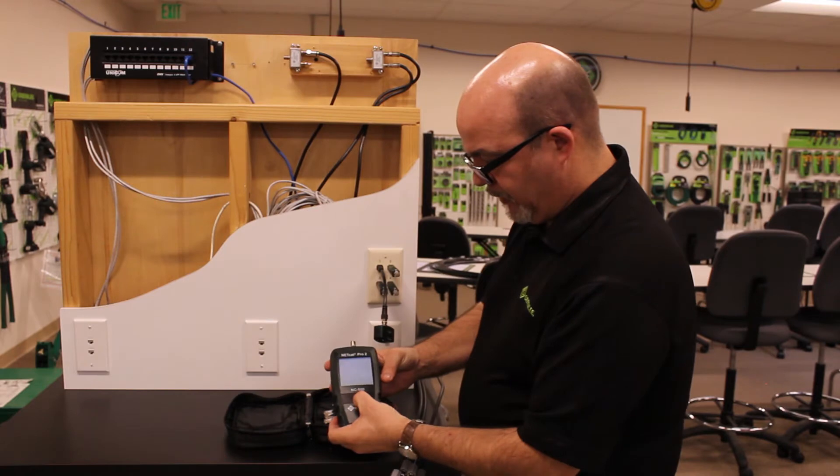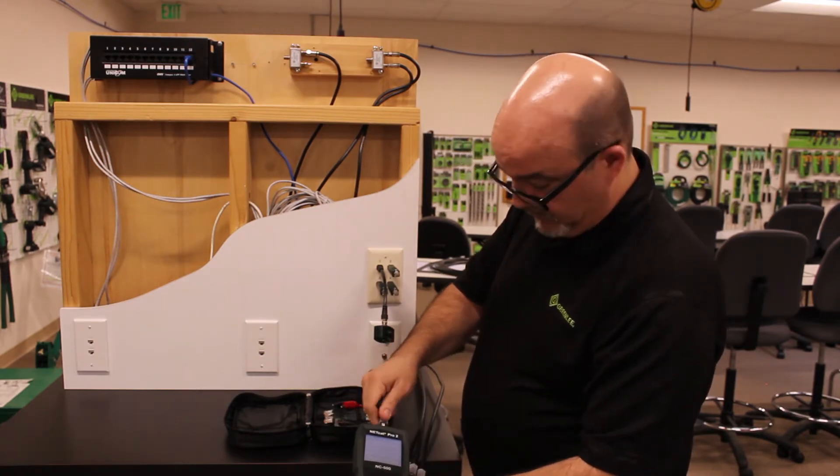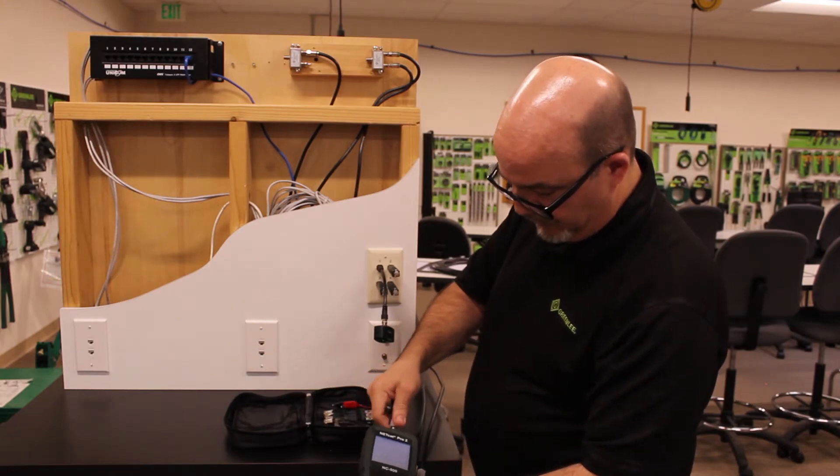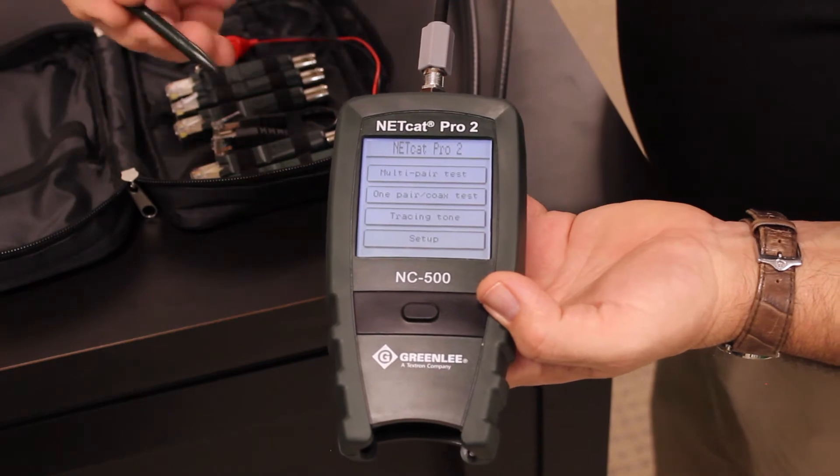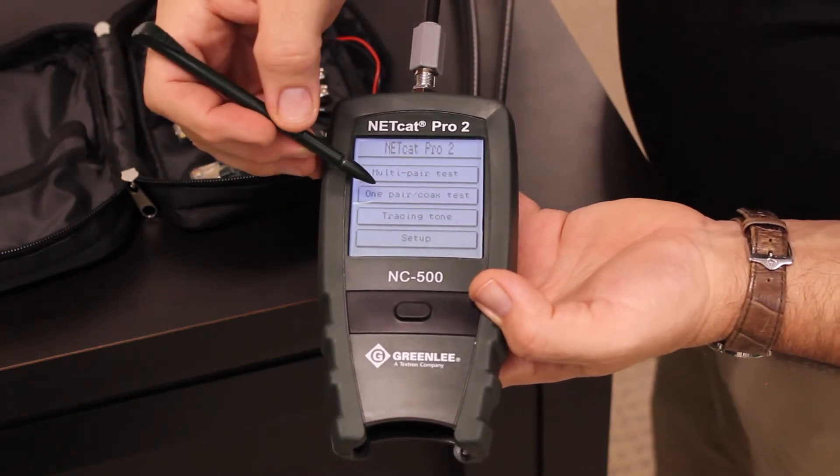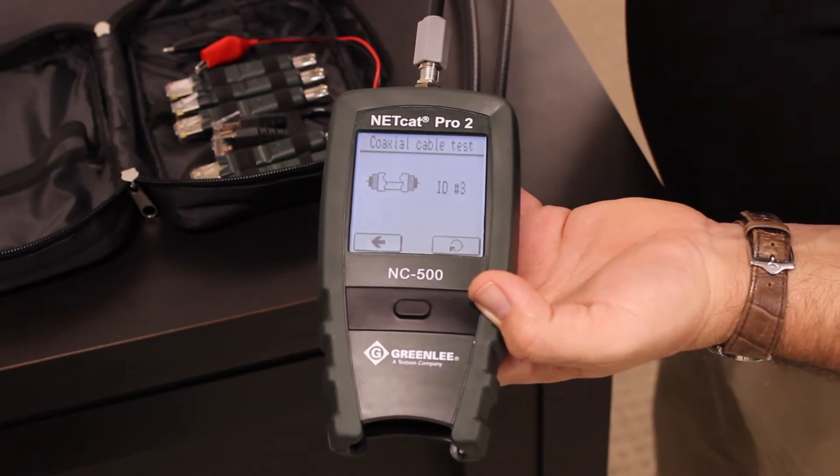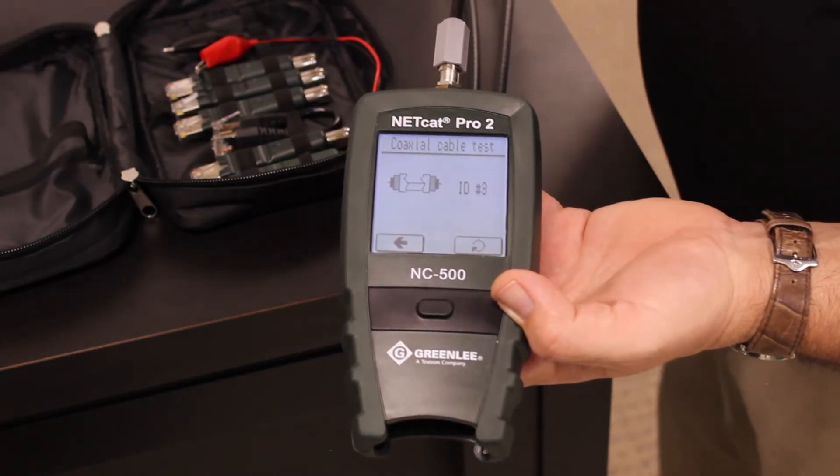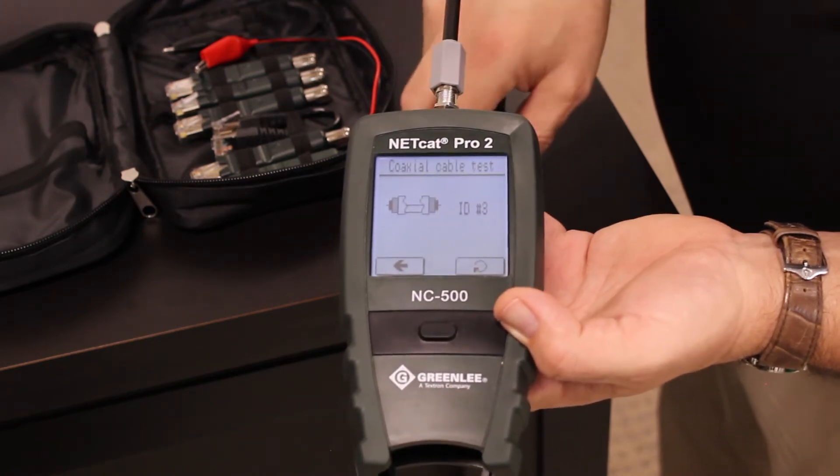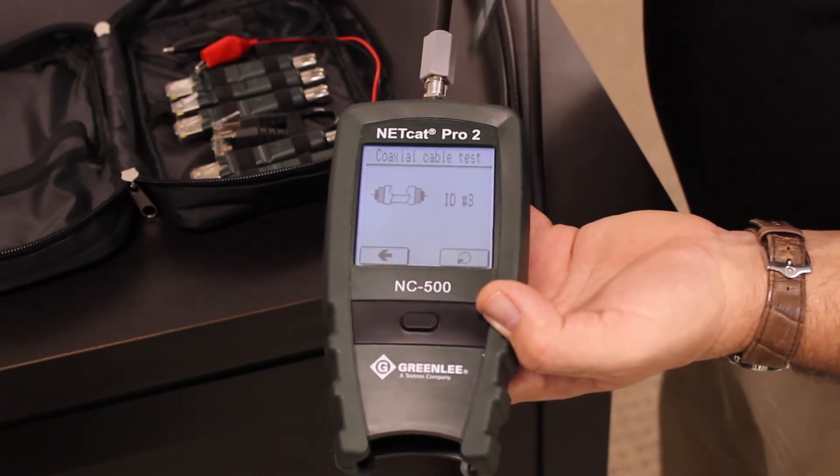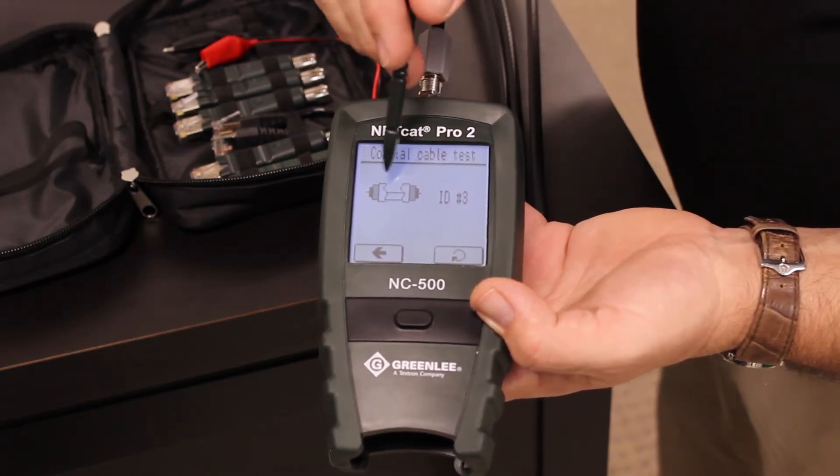We are going to turn on the NC500. We will connect the cable to the coax connector at the top of the unit. To initiate a test, you want to press with the stylus on the one pair coax test button. This cable corresponds with ID 3, so this is cable run number 3. You can then proceed to disconnect this cable, connect the other cables, and each of the IDs will be noted here to the right of this cable symbol.